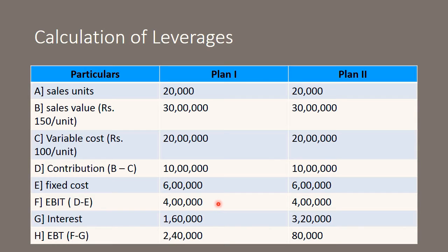Now, interest. The debt capital for Plan 1 was 10 lakh rupees in debentures at the cost of 16%, so 16% of 10 lakhs is 1 lakh 60,000. For Plan 2, debt capital was 20 lakh rupees at the cost of 16%, so 16% of 20 lakhs would be 3 lakh 20,000. Those are the interest values for each plan.